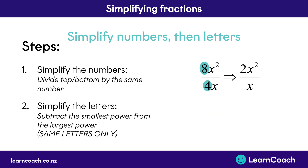Now we go on to step 2, simplifying the letters. The way we do this is by looking at powers. Here we have 2x squared, that means to the power of 2. And on the bottom where you don't see any power, that means to the power of 1. The way you simplify these is you subtract the little power from the big power.